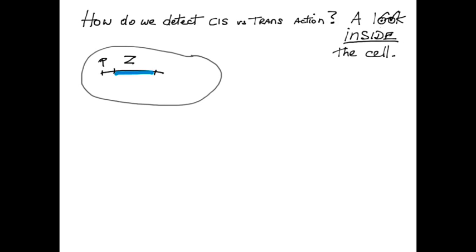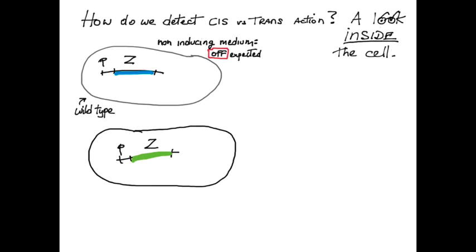Consider two bacteria. One wild type, the other a constitutive mutant at the lac operon, expressing the Z protein beta-gal under non-inducing condition when the wild type Z gene is repressed.